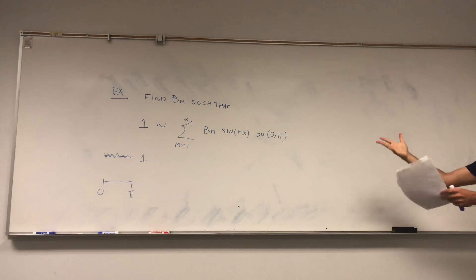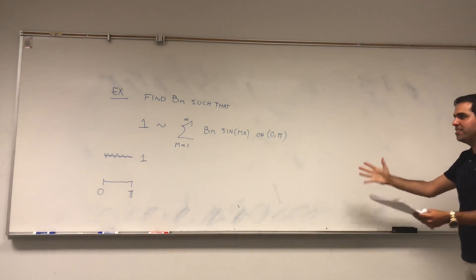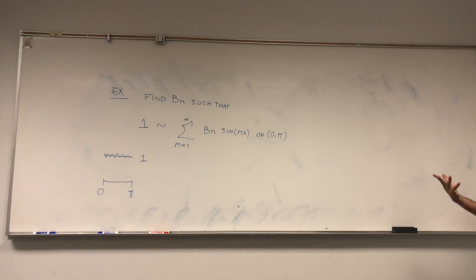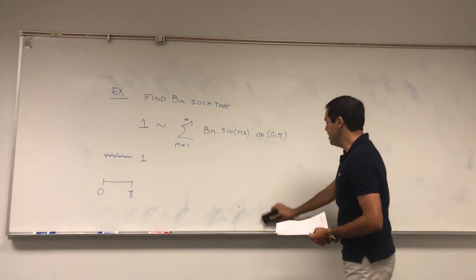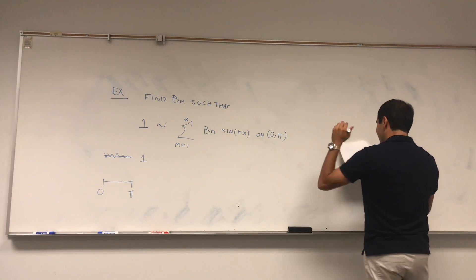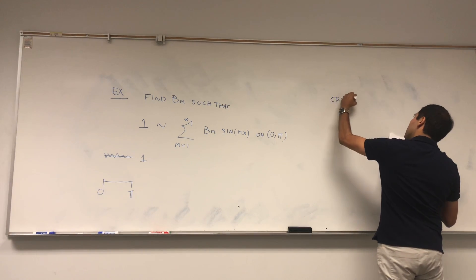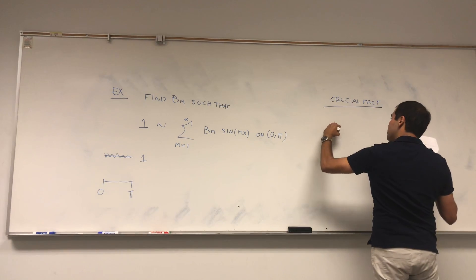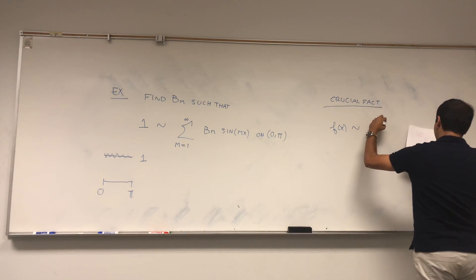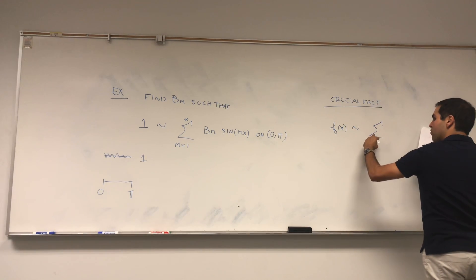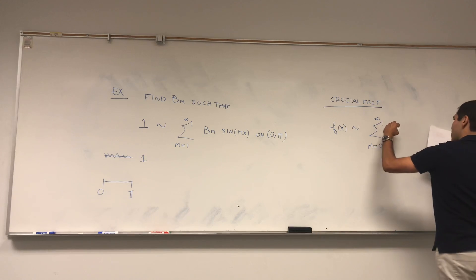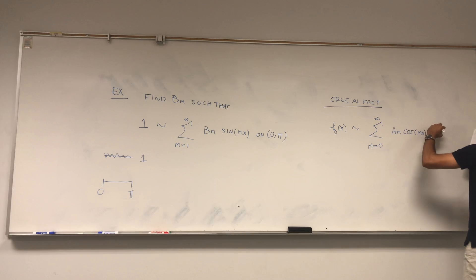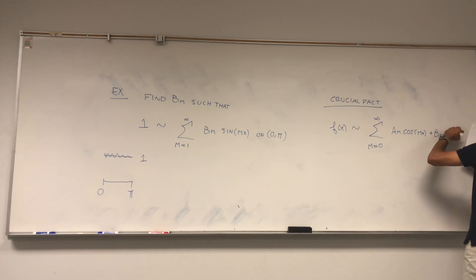So it looks like it's easier than finding the full Fourier series — turns out the full Fourier series is actually easier. And it all relies on symmetry, namely on even and odd functions. Here's the crucial fact: suppose f of x has the Fourier series sum from m equals 0 to infinity of am cosine mx plus bm sine mx.